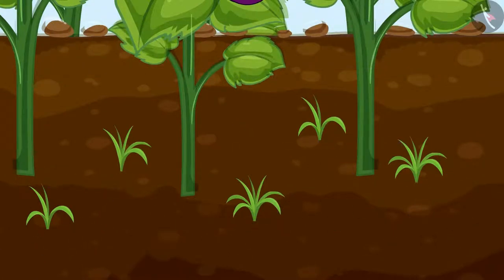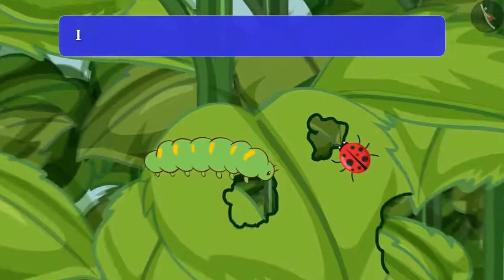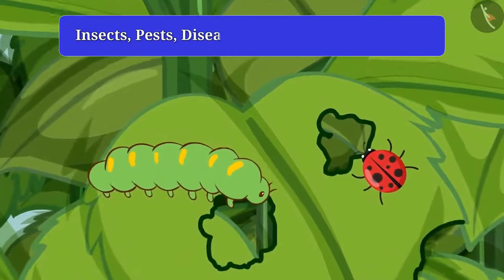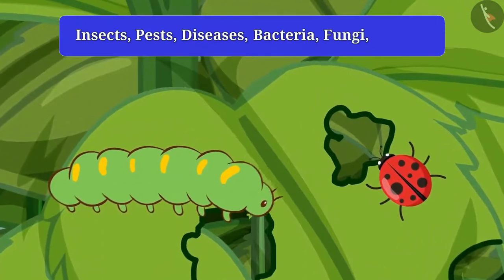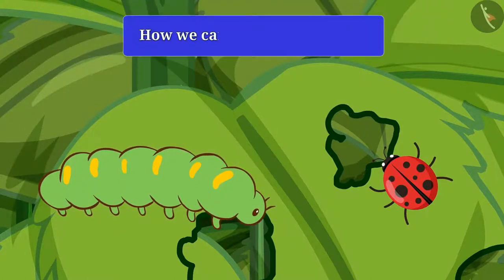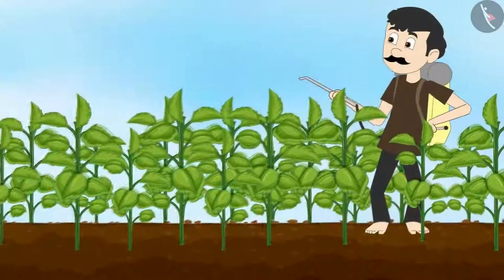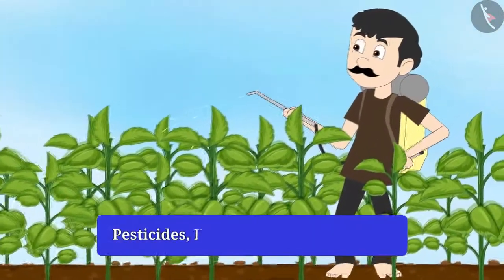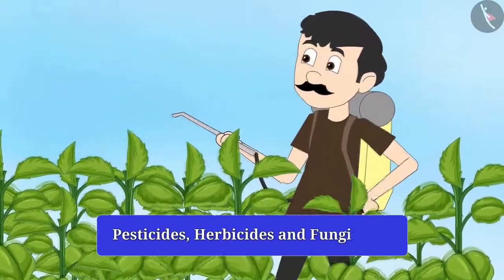Do you know, apart from weeds, what can damage crops? Yes, apart from this, insects, pests, and diseases also destroy the crops. Diseases in crops are caused by bacteria, fungi, and viruses. Do you know how we can protect the crops from them? By spraying chemicals such as pesticides, herbicides, and fungicides.